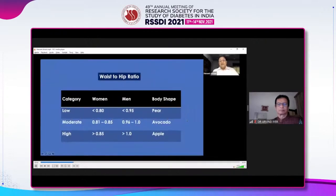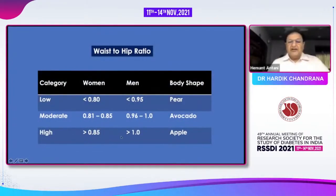An even more sensitive parameter is the waist-to-hip ratio. If the patient is in low risk, the ratio is less than 0.8 in women and less than 0.95 in men, and the body shape is called a pear shape. For moderate risk, it is between 0.81 to 0.85 in women and 0.96 to 1 in men — we call it the avocado kind of body shape. For high risk, women more than 0.85 and men more than 1, which is the apple shape — this is a high risk category.